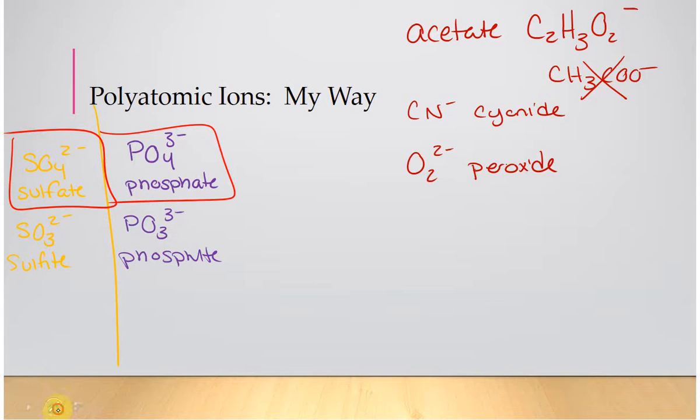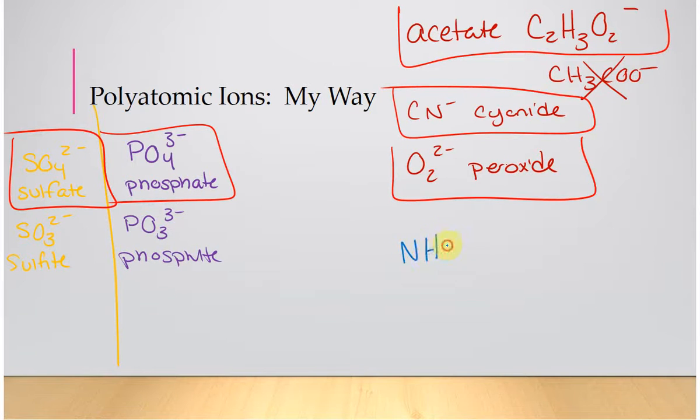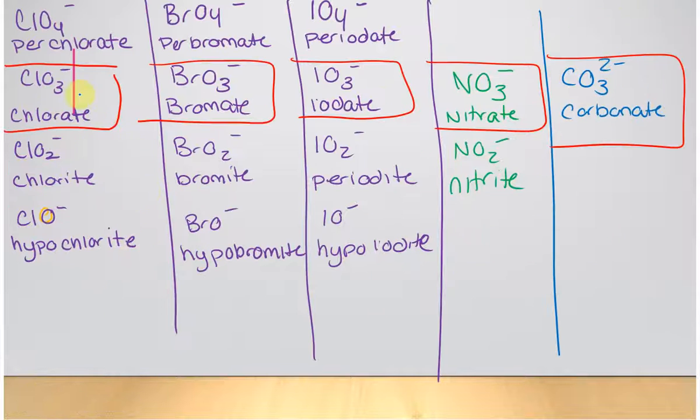We also need, I'm going to go ahead and box these. The only polyatomic cation, and that is ammonium. NH4 with a positive charge is ammonium. Okay, so if we look, one, two, three, four, five, six, seven, eight, nine, ten, eleven. Usually, I leave off the bromate, but these are the ones that you are going to see repeatedly this semester. So those are the ones that I would focus on. Those are the ones you need to know.